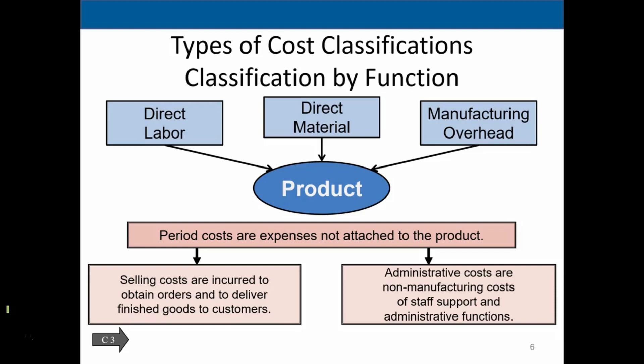Manufacturing overhead is a little bit more difficult. We try to apply anything within the production — if there's rent on the kitchen, that would be applied to the burger, but it's more difficult to apply to individual burgers. A supervisor's salary might be more difficult if they're supervising different areas. But we will try to allocate manufacturing overhead to the product. Those are the three things always involved in the production process. When we think about making any type of inventory — cars, guitars — it's going to include direct labor, direct material, and manufacturing overhead.